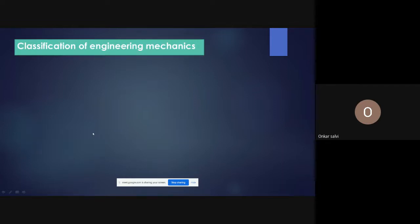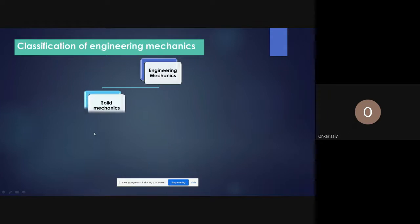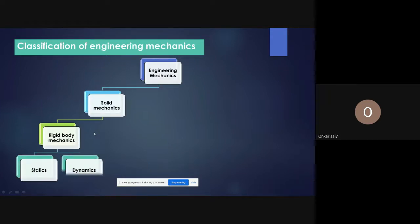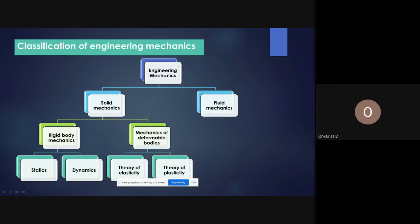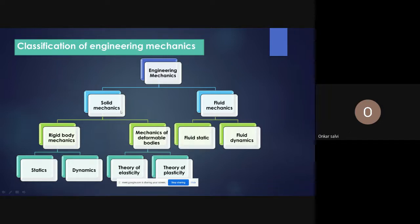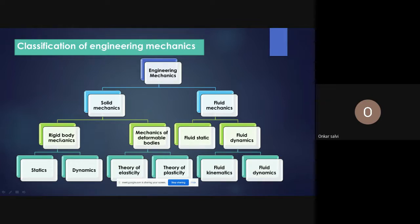Fluid mechanics is part of engineering mechanics, which you studied in your first year. Mechanics is mainly divided into solid mechanics and fluid mechanics. Solid mechanics has two branches: rigid body mechanics — which is the first-year mechanics subject where we assume the body is perfectly rigid with no deformation — and mechanics of deformable bodies.